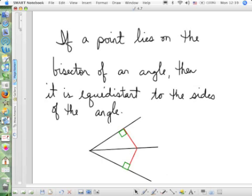Next theorem. We talked about the bisector of a segment. Now let's talk about the bisector of an angle. If a point lies on the bisector of an angle, then it, the point, is equidistant to the sides of that angle.